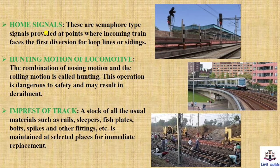Home signal. These are semaphore-type signals provided at points where incoming trains face the first diversion for loop lines and sidings. If you need a dedicated video on home signals, you will find a link in the description.